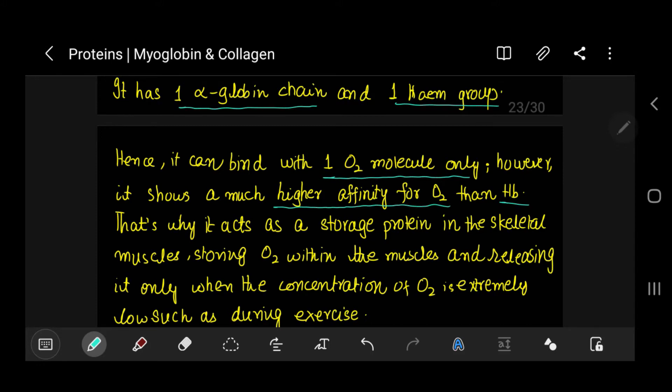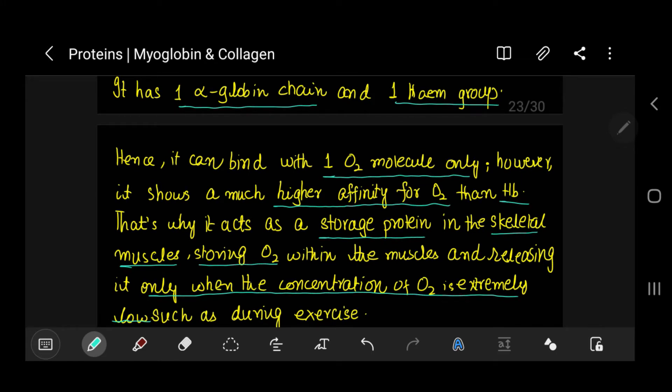This means that it holds onto the oxygen for much longer than hemoglobin and releases that oxygen molecule only when there's a very high demand or a very deficient medium surrounding this myoglobin. This is the reason that it acts as a storage protein in the skeletal muscles, storing O2 within the muscles and releasing it only when the concentration of oxygen is extremely low. This will happen when the body needs a high amount of oxygen, as in very high muscular activity, and that example is during exercise.